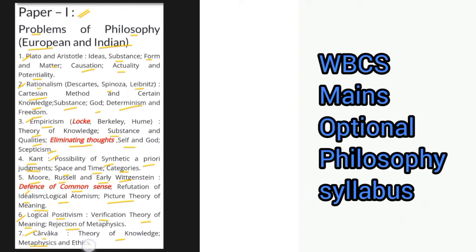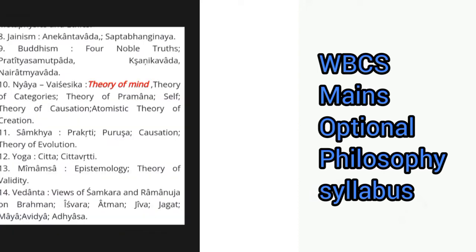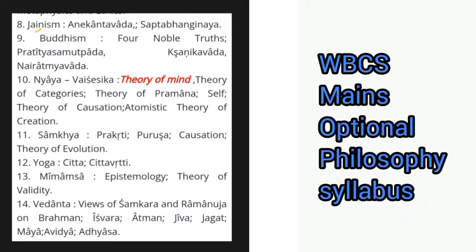The next point deals with Charvaka — theory of knowledge, metaphysics and ethics. Next we have Jainism, under which there are different theories. Next we have Buddhism — four noble truths, Pratitya Samutpada, Nasika Vada, and different other theories. Then Nyaya and Vaisheshika — theory of mind, theory of categories, theory of pramana, self theories, theory of causation, and atomistic theory of creation.